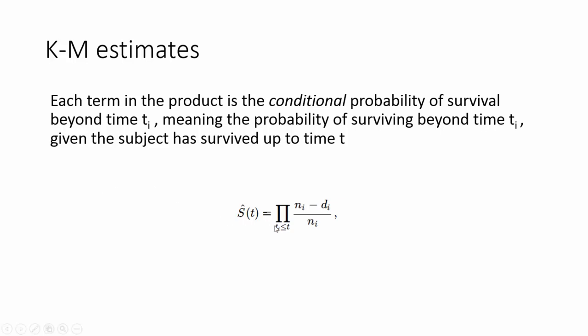To generalize it, your survival estimate is the product of ni minus di over ni, where ni is the total number of population entering at time t and di is the number of events happening at time t.